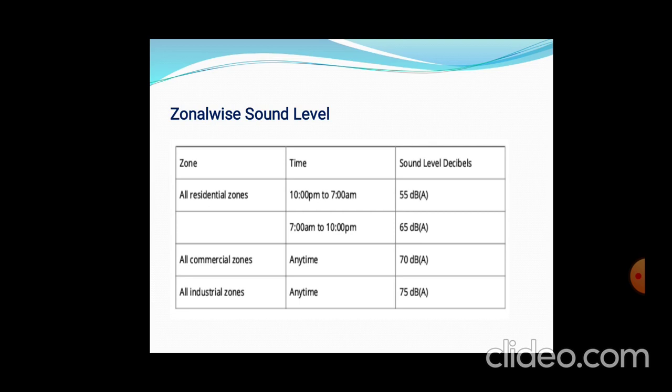For residential areas, the sound level depends on the time span: 10 p.m. to 7 a.m. is 55 decibels, while 7 a.m. to 10 p.m. is 65 decibels. For commercial areas, it is nearly 70 decibels at any time, and for industrial areas it is 75 decibels at any time.